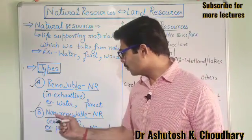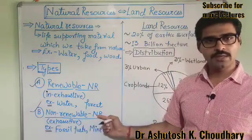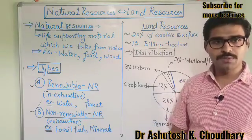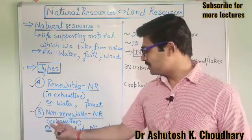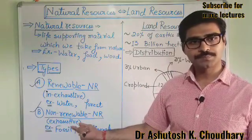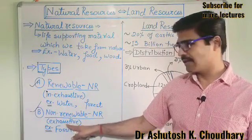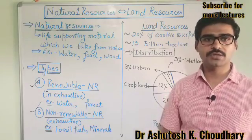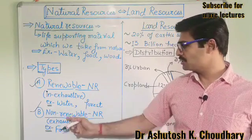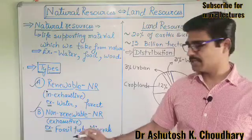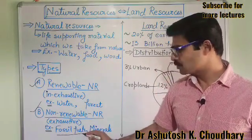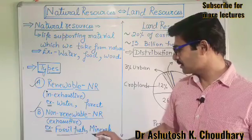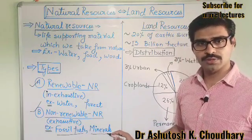Next is non-renewable natural resource. Non-renewable natural resource means which is exhaustible. Once exhausted, it cannot be regenerated in the near future. So this is non-renewable natural resource. Examples we have: fossil fuels, petroleum products, minerals, nuclear fuels, and coal.